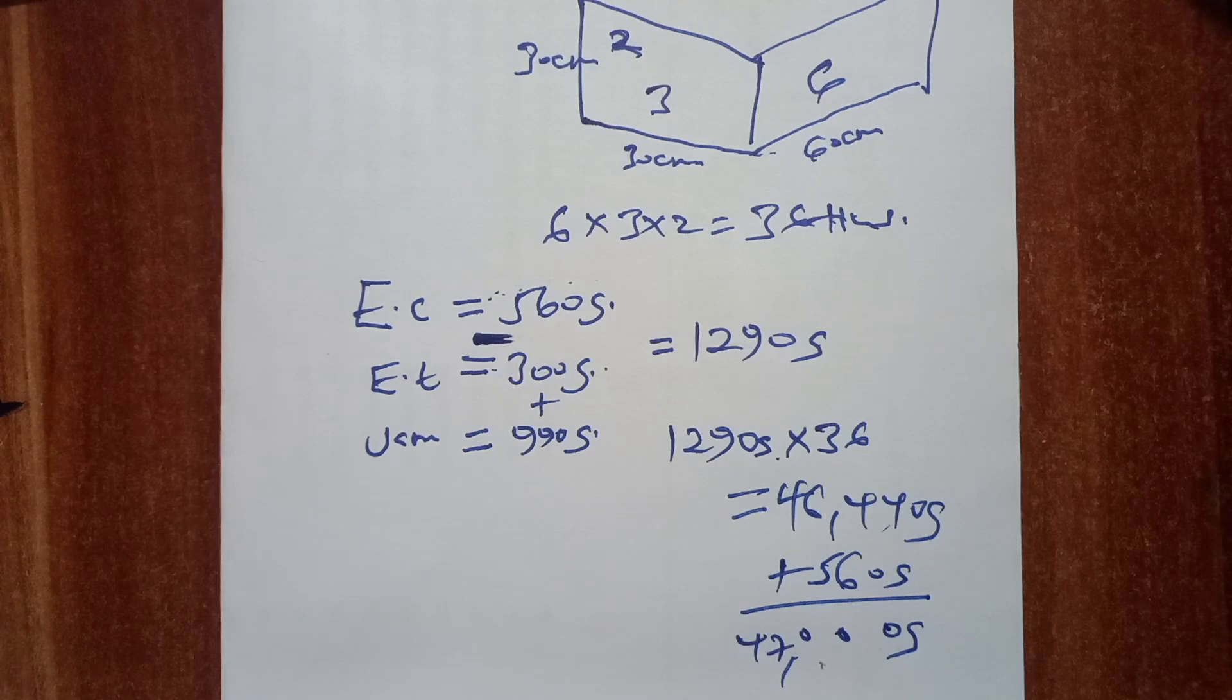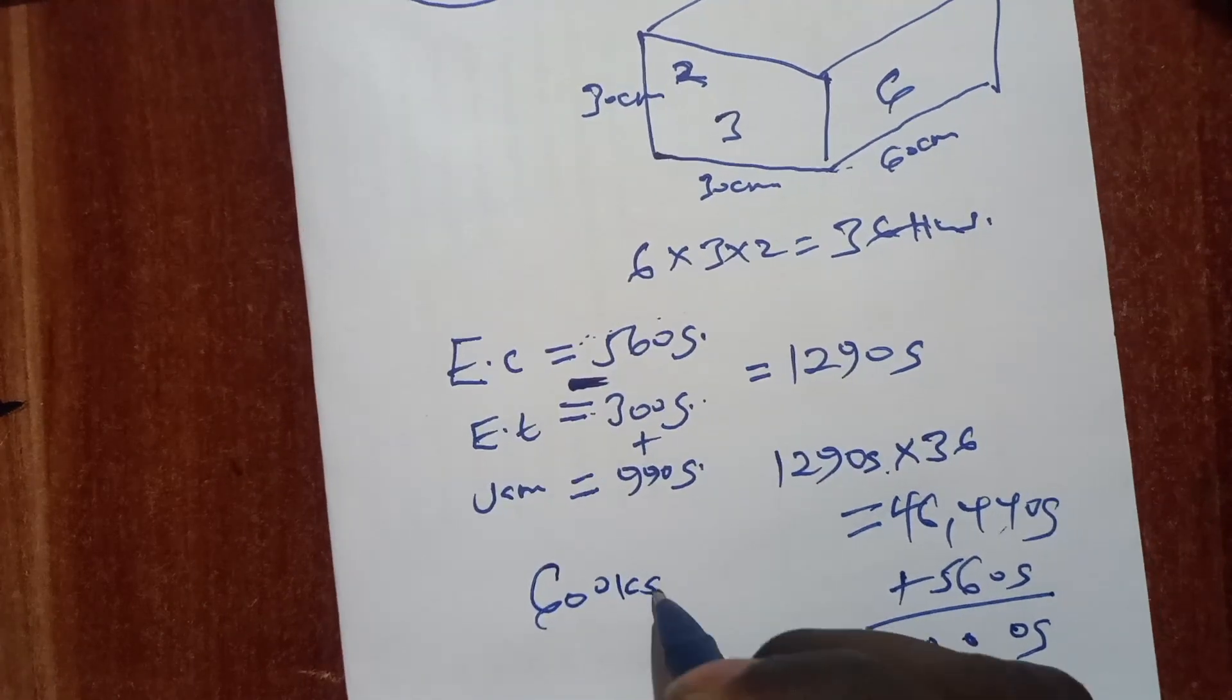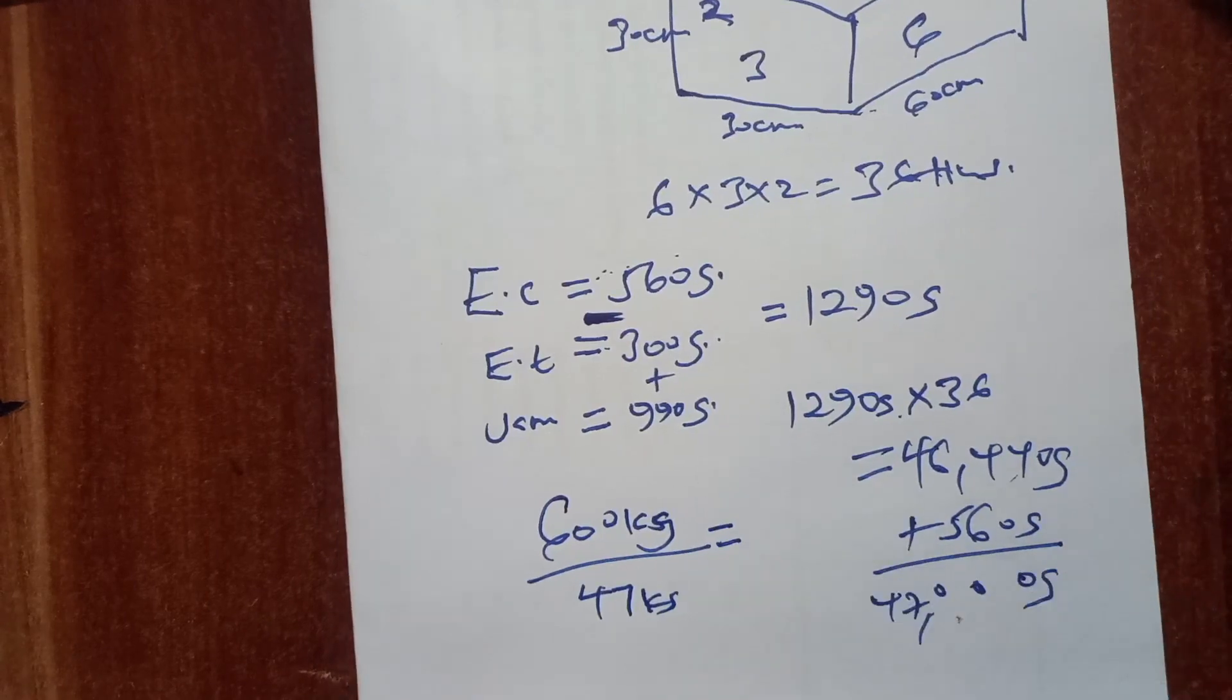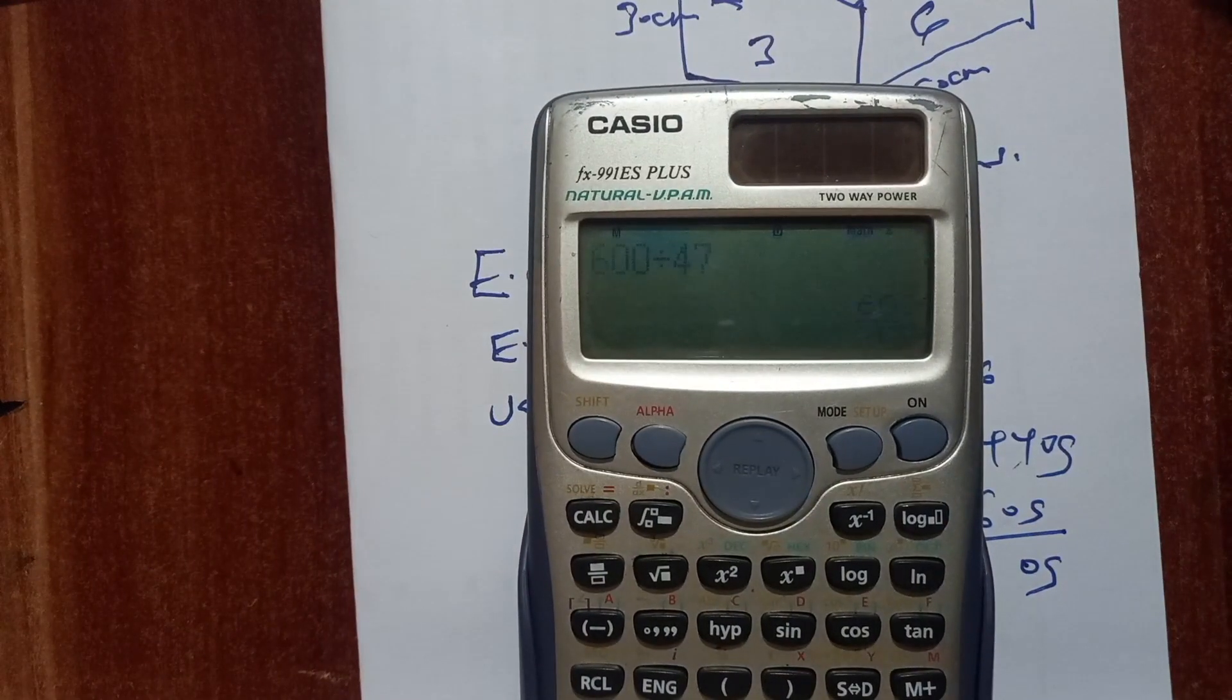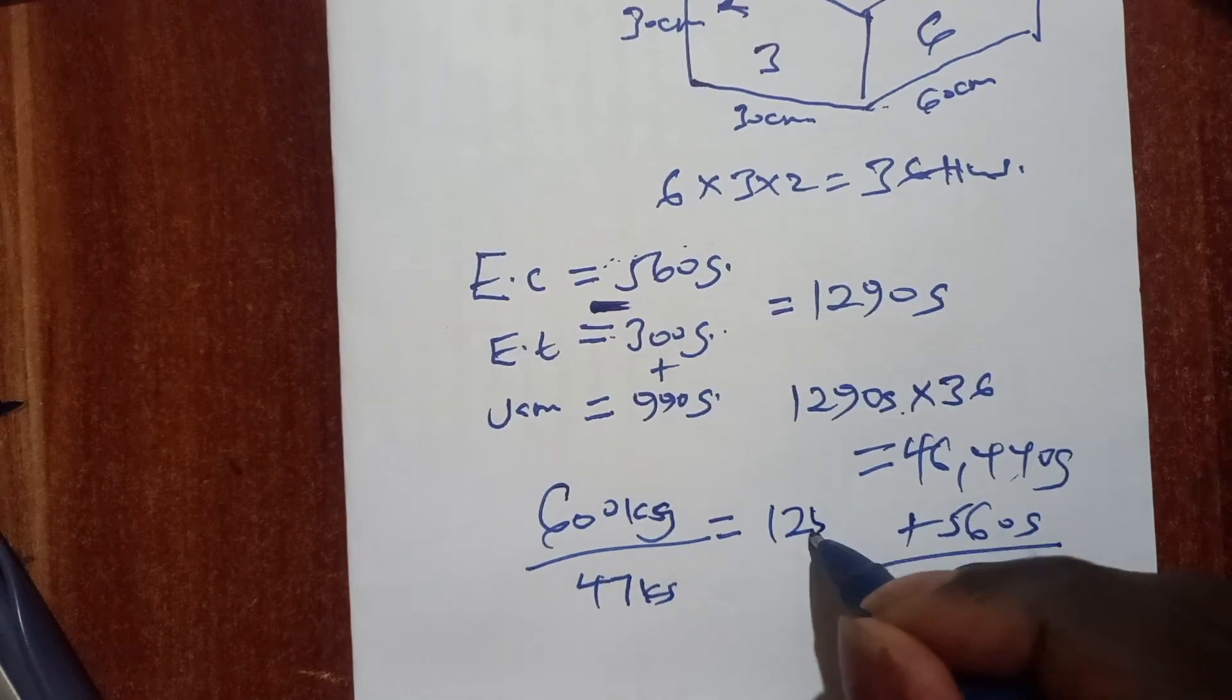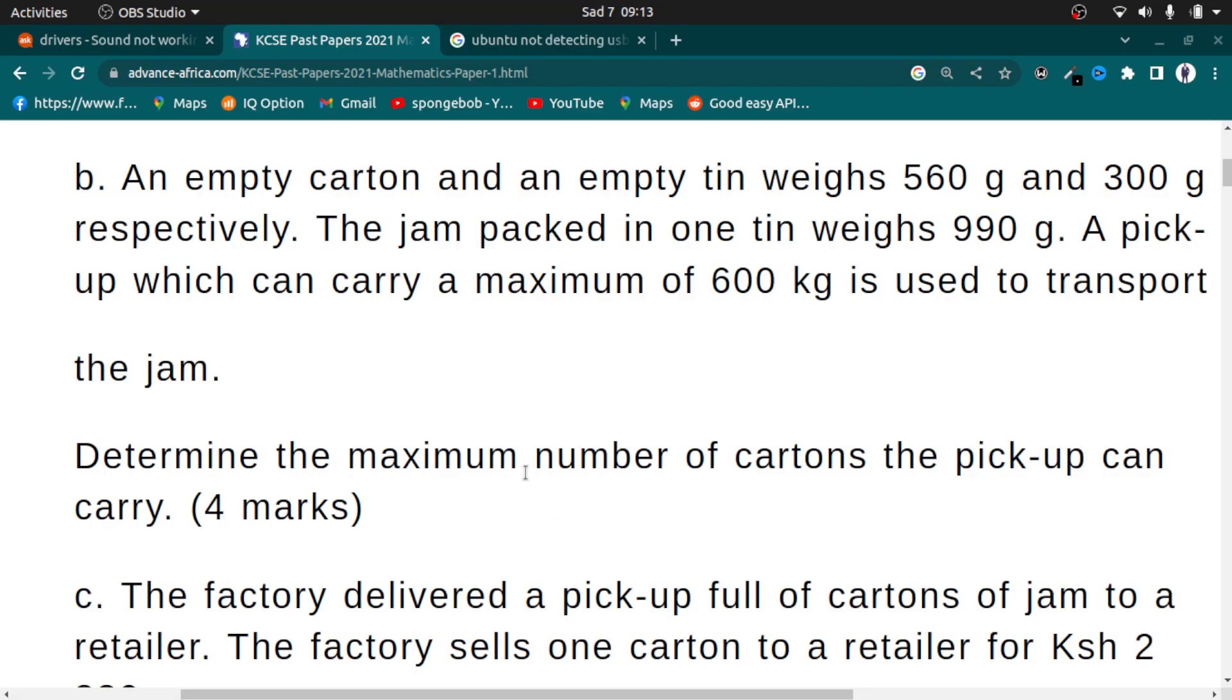Now we are told that the pickup is able to carry a maximum of 600 kilograms. So we take the 600 kilograms that it's able to carry, then divide by the weight of one box, which is 47 kilograms. 600 divided by 47 gives us 12.765. We truncate it to 12 boxes. So a pickup can carry a maximum of 12 boxes. That was the second question that was being asked. Let's go to the next question.